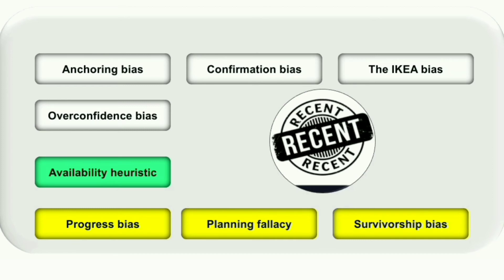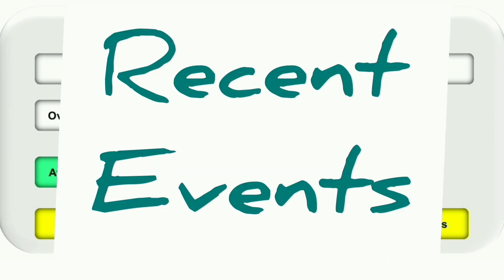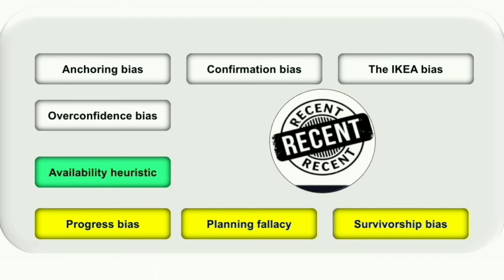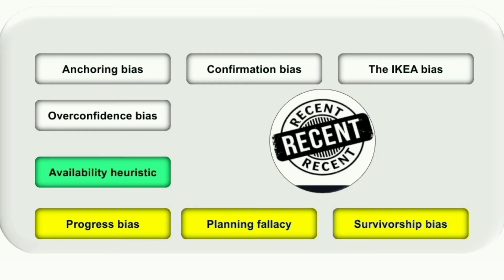Availability heuristic is a type of bias based on recent events — our decision making and thought process are influenced by what has happened recently. For example, during the COVID period many people were laid off, making us afraid of losing our jobs. Or if you recently saw a plane crash report in the news, you become afraid to fly, even though the likelihood of dying in a car accident is far higher than dying as a passenger on an airplane. This decision making based on recent events is called availability heuristic.